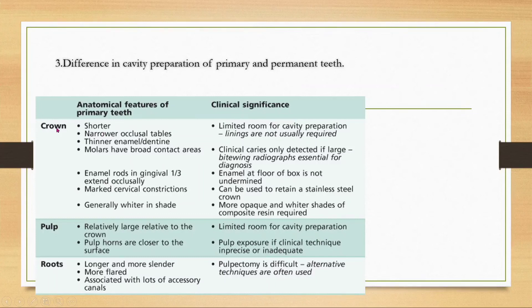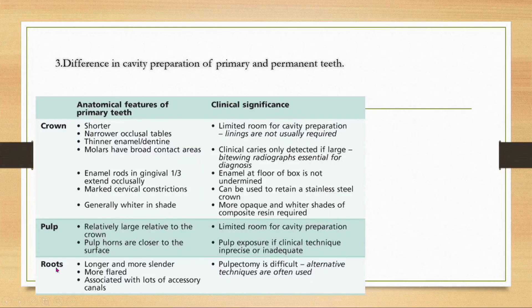Primary teeth have a larger pulp relative to the crown, and pulp horns are very close to the surface. This means limited room for cavity preparations, which can soon result in pulpal opening. Roots are longer, more slender, and more flared, associated with many accessory canals — making pulpectomy technically difficult.